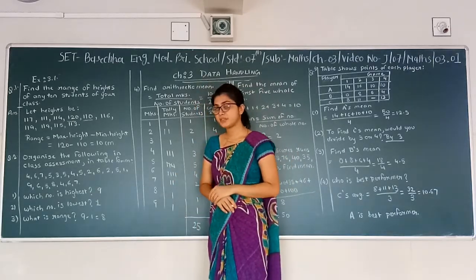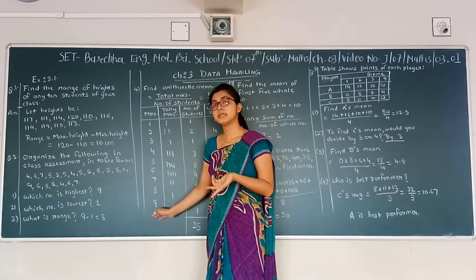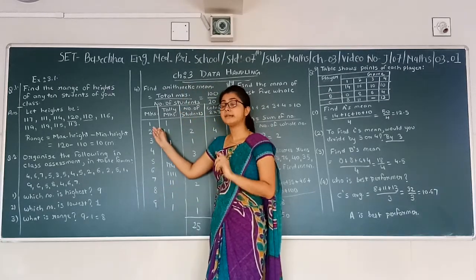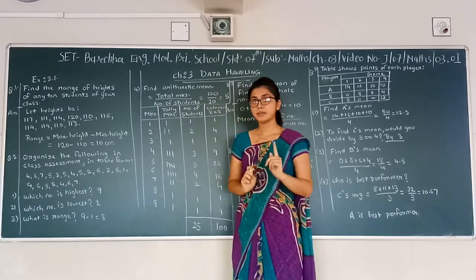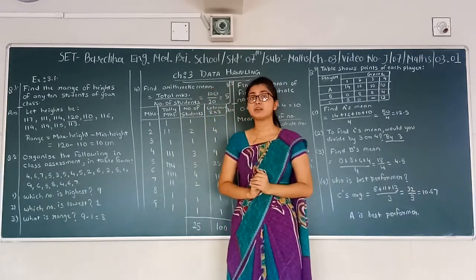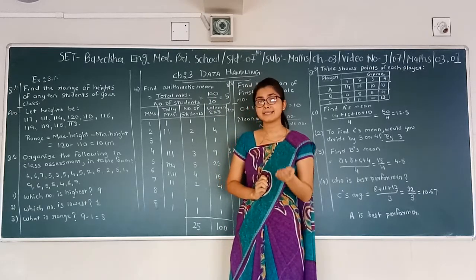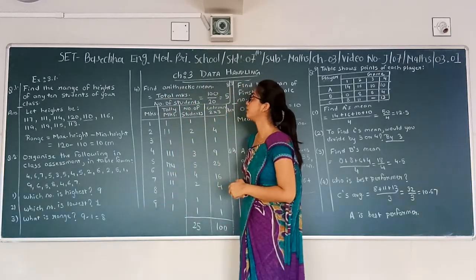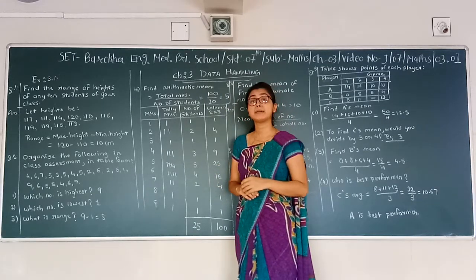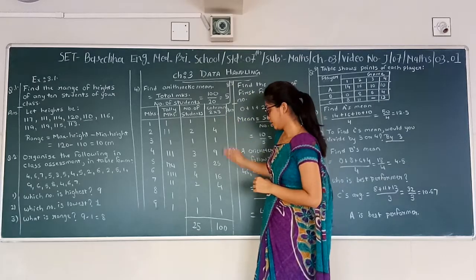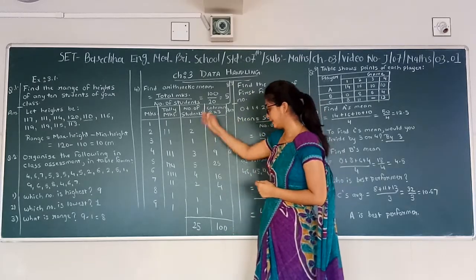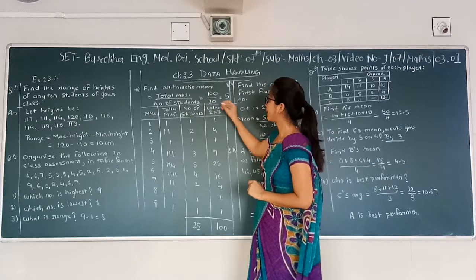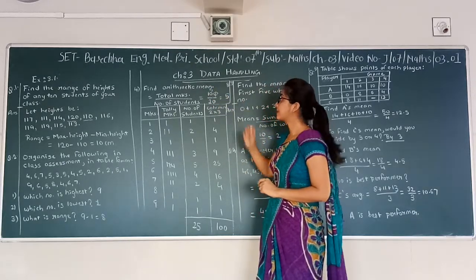Now let us answer the sub-questions. Which number is highest? The number written last in the table is highest, so the answer is 9. Which number is lowest? The number written at the top is lowest, so the answer is 1. What is the range? Range equals highest minus lowest, so 9 minus 1 equals 8. For arithmetic mean, total marks are 100 and total students are 20, so 100 divided by 20 equals 5.